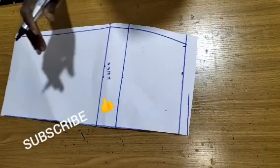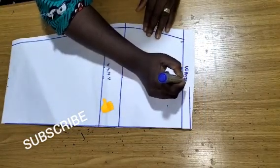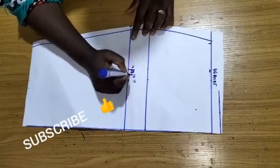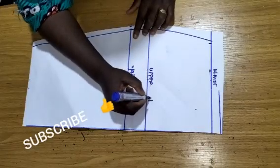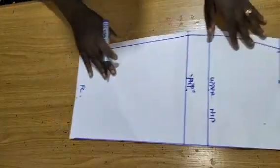Right here I have my skirt pattern piece which I've already drafted. This is my waistline, this is the hip line which is the lower hip and the upper hip line, and I have the full length of this skirt pattern.